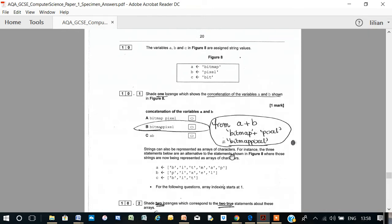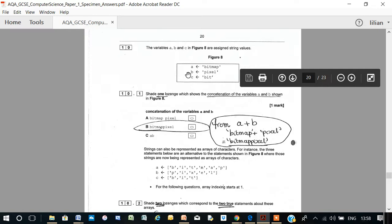Let's have a look at number 10, specimen 1. Variables A, B, and C are assigned values. A equals bitmap, B equals pixel, C equals bit.